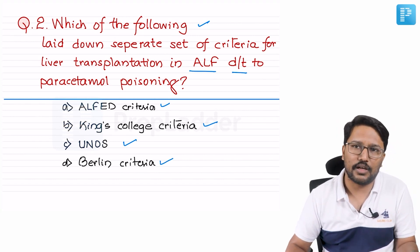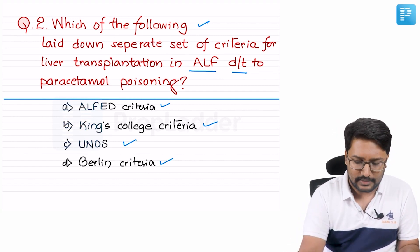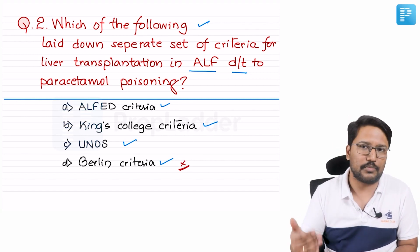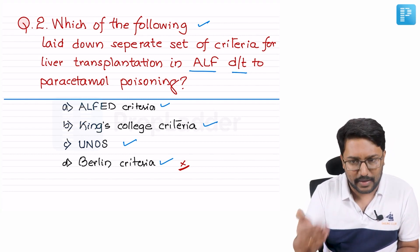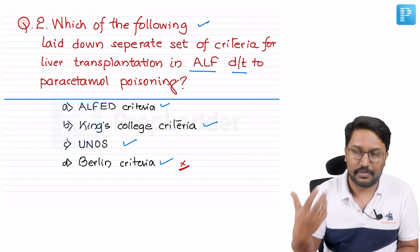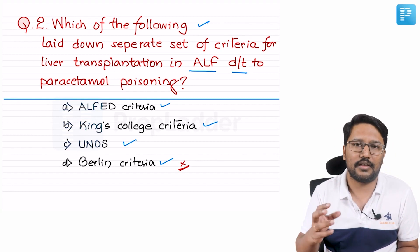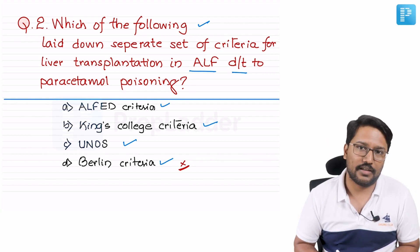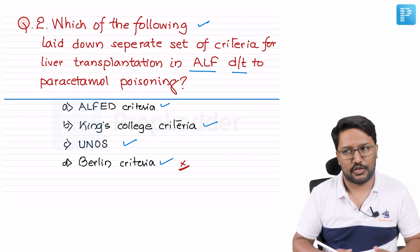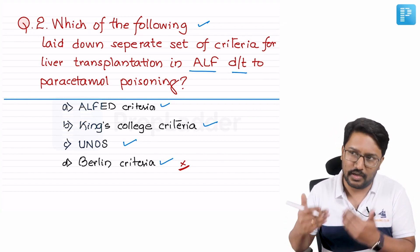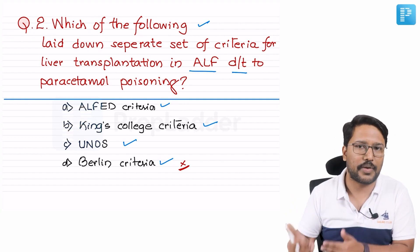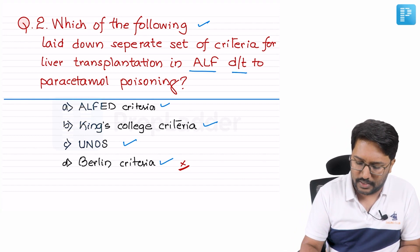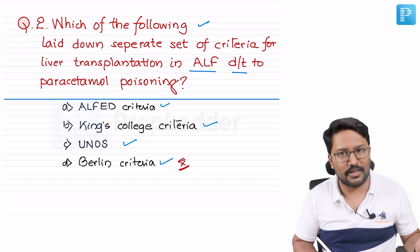Before we discuss more about paracetamol poisoning, we can comfortably rule out option D. When I hear Berlin Criteria, the first thing that comes to mind is that it's a set of parameters describing or defining ARDS. So Berlin Criteria is used for definition and diagnosis of ARDS — nothing directly related to paracetamol. If a patient with paracetamol toxicity develops ARDS, we'd apply Berlin Criteria for that, but it's not directly connected to paracetamol poisoning. So option D is out.